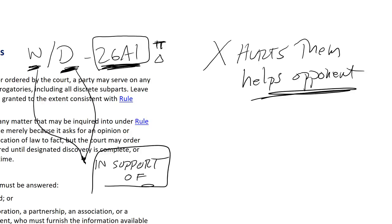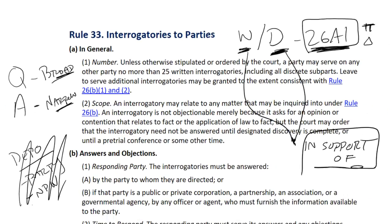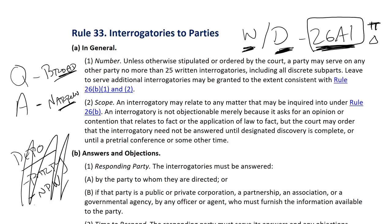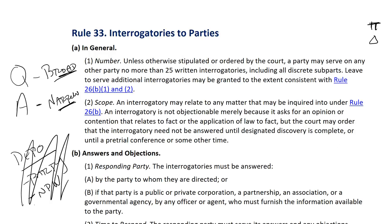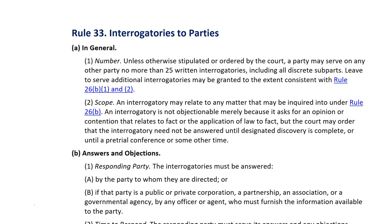So don't rely just on Rule 26A disclosures. You've got to use other discovery devices, and interrogatories can oftentimes be a good way of getting more information regarding documents, witnesses, who they are, where they can be found, and so on.